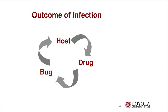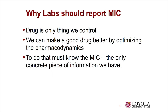The outcome of infection is my topic. What regulates the outcome of infection? There are really three things: the drug, the bug, and the host. We can't do anything about the bug or the host — the only thing we can really control is the drug. We can make a good drug better by optimizing the pharmacodynamics, but to do that, you need to know what the MIC is. It's the only concrete piece of information that we have.